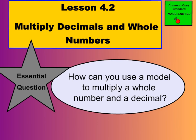Hi there, boys and girls. Tonight's lesson is going to be lesson 4.2. Please turn in your Go Math book to lesson 4.2. We're going to be learning about multiplying decimals and whole numbers. Our essential question is: how can you use a model to multiply a whole number and a decimal? Let's go ahead and begin.